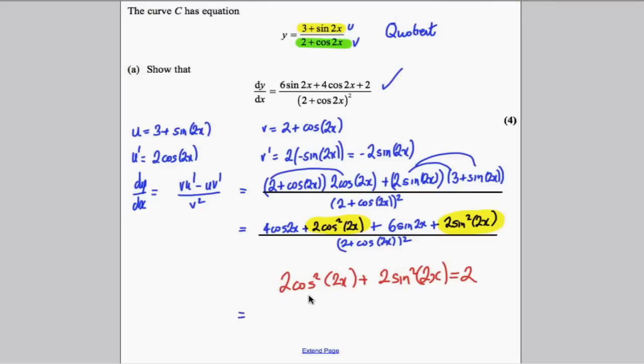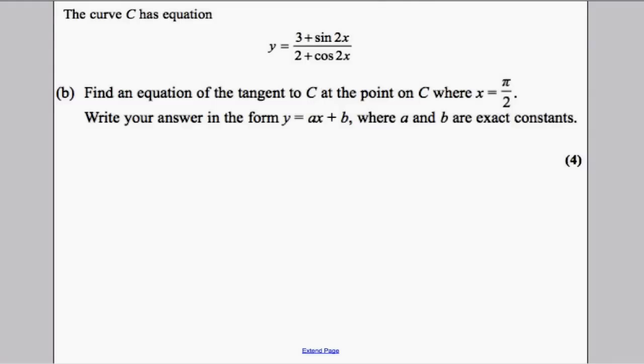So you have your 6 sine 2x plus your 4 cos of 2x plus the 2, all divided by 2 plus cos of 2x, all of that squared. And you've got yourself the 4 marks you're looking for. Part B says, find an equation of the tangent to the curve at the point where x is pi by 2. Write your answer in this form where a and b are exact constants.